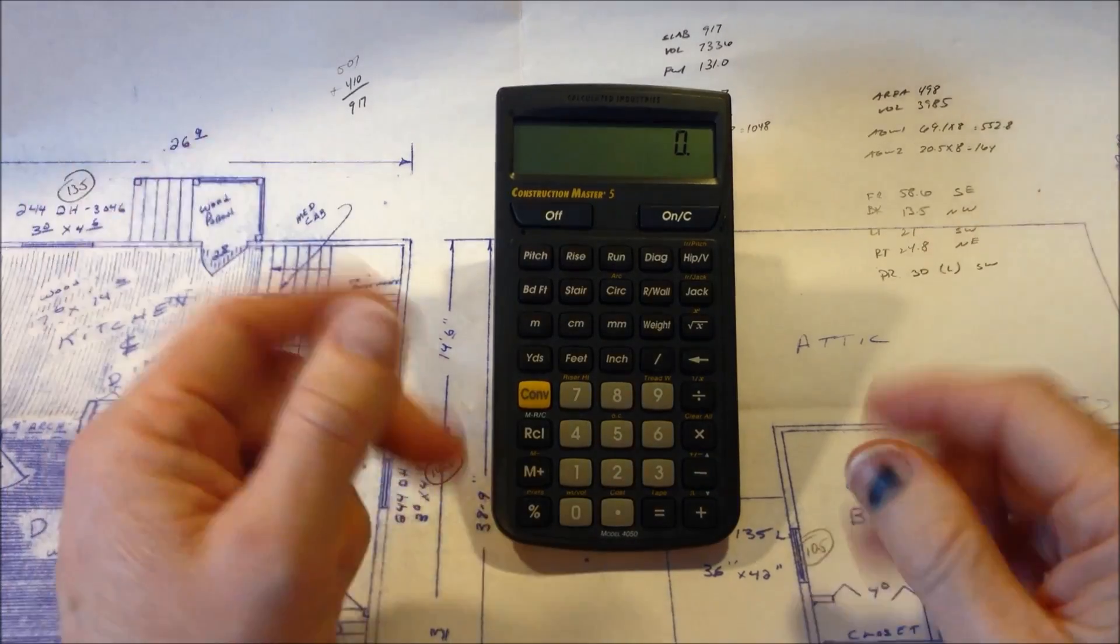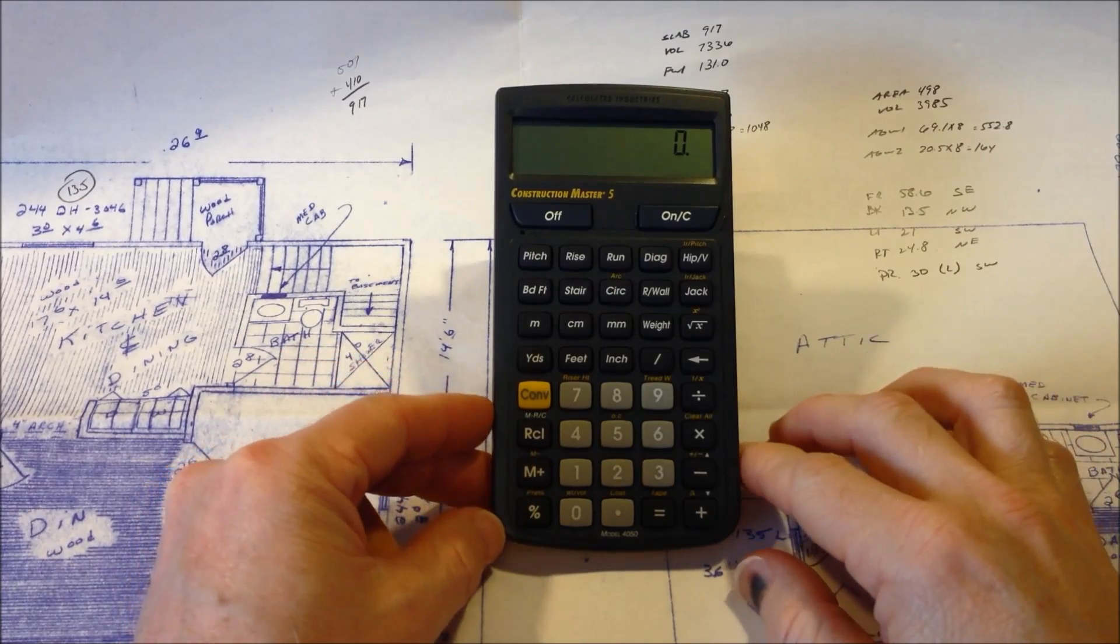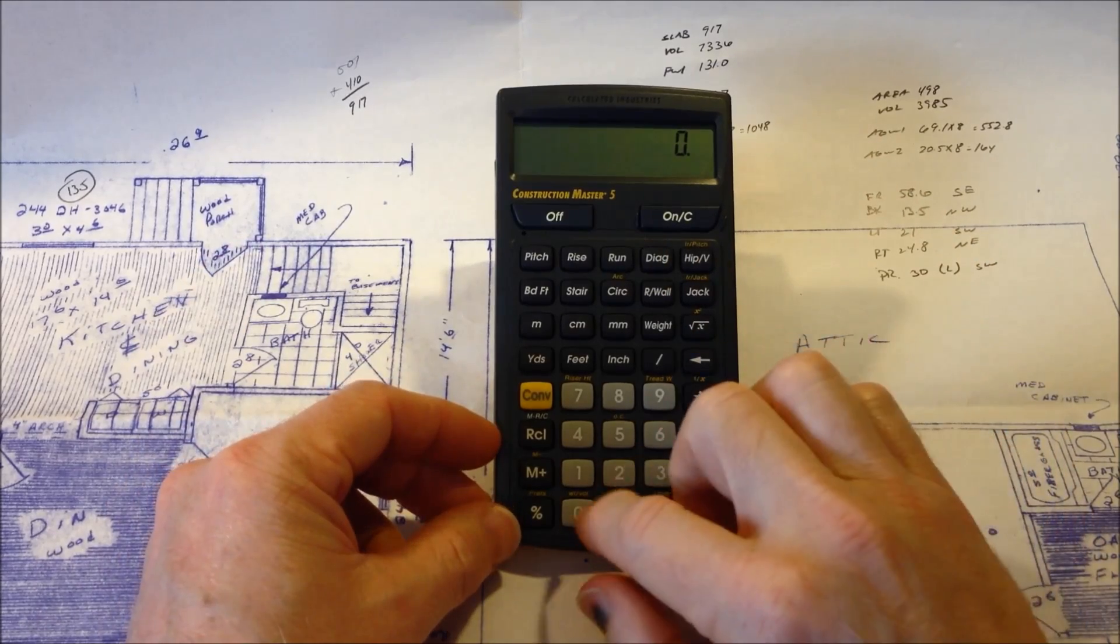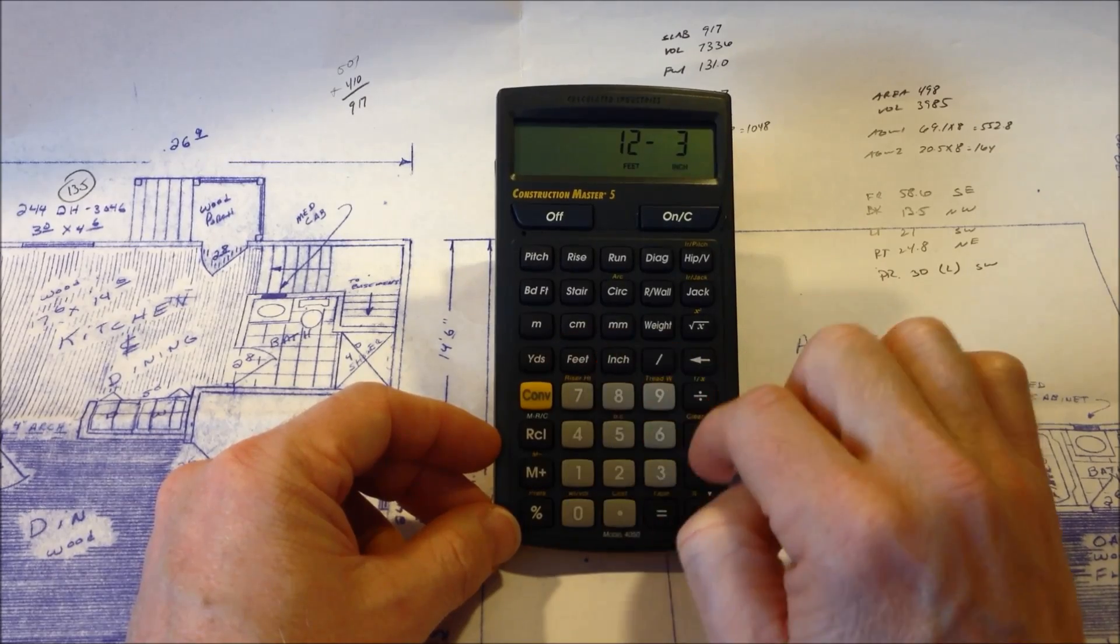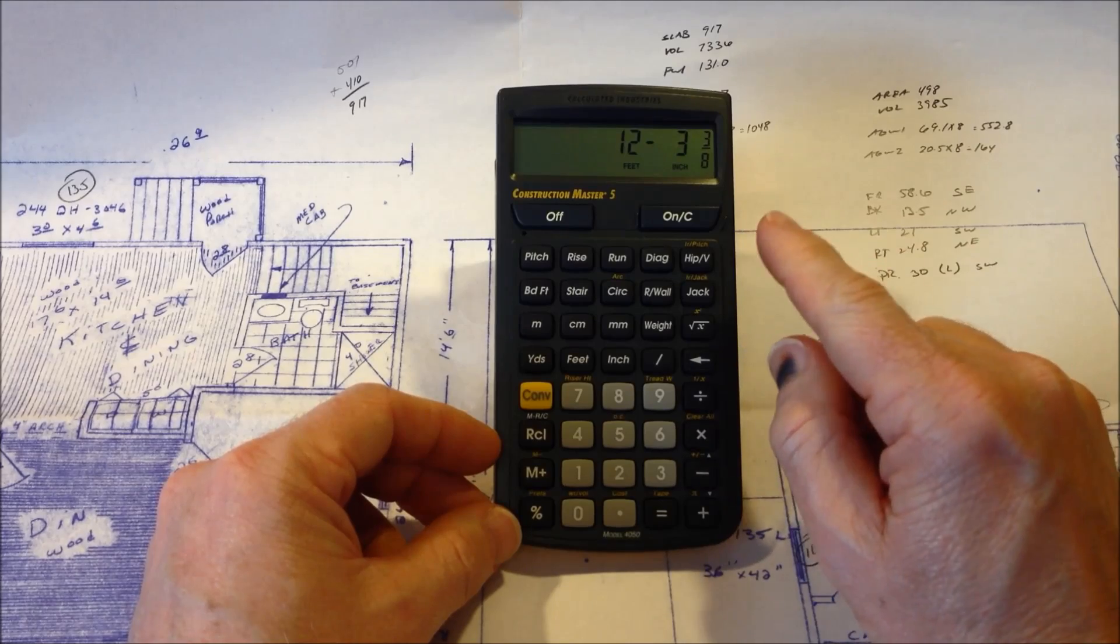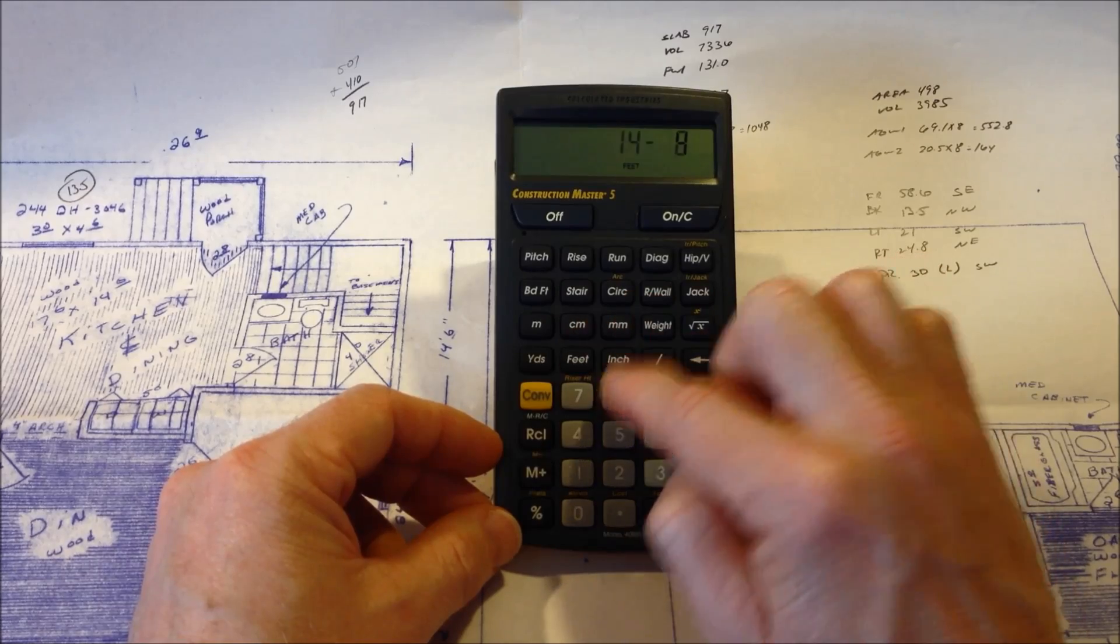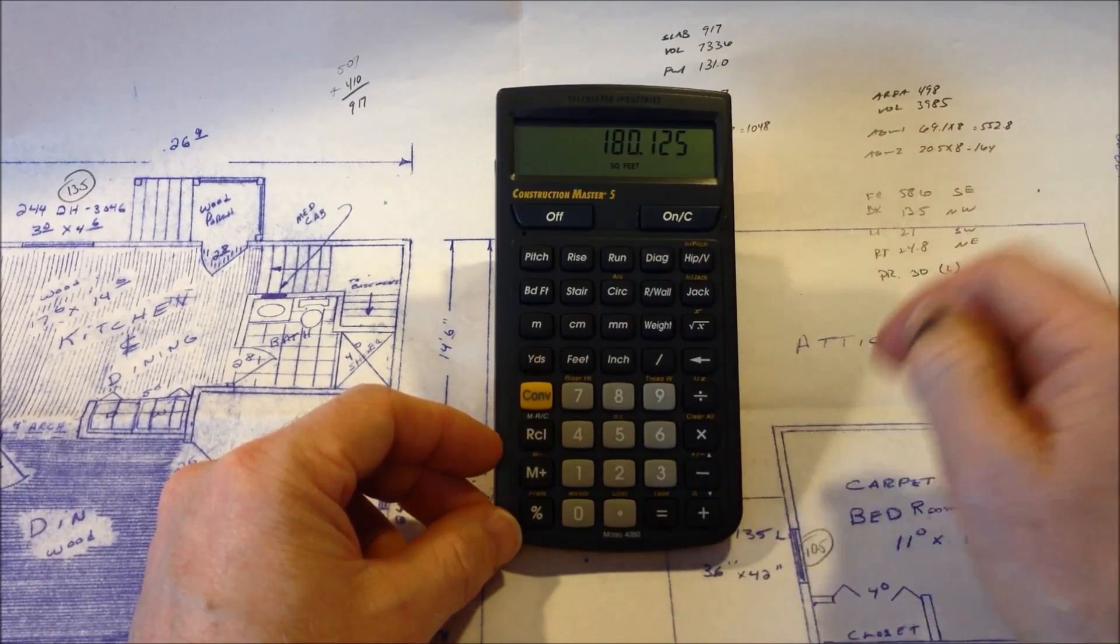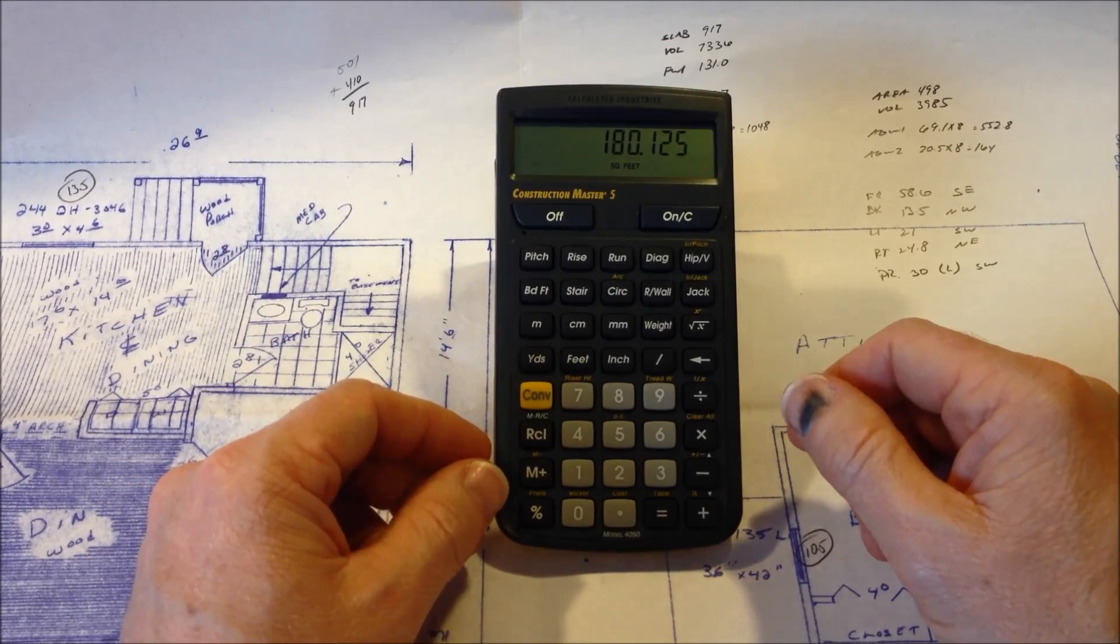Some of the most common calculations that I make with the calculator are the feet and inches calculator to get the decimal equivalent to put in a Windows software program. So for example, we might have a room which is 12 feet 3 inches and 3/8. So we've got 12 foot 3 and 3/8 of an inch by 14 feet 8 inches. Hit equals and you can see that that room is 180.125 square feet. It's a pretty handy function.